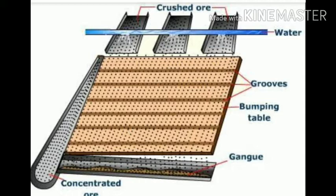The concentrated ore accumulates on the left side in the diagram. The impurities, also known as gang particles, are removed by using a strong water jet, which washes away the lighter particles and impurities.